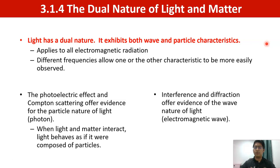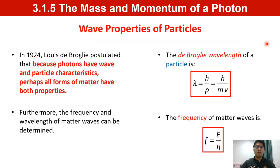The last topic is the mass and momentum of a photon. In 1924, Louis de Broglie postulated that because photons have both wave and particle characteristics, perhaps all forms of matter have both properties. Furthermore, the frequency and wavelength of matter waves can be determined. The de Broglie wavelength of a particle is given by lambda equals h over momentum equals h over mv, and the frequency of a matter wave is f equals E over h.